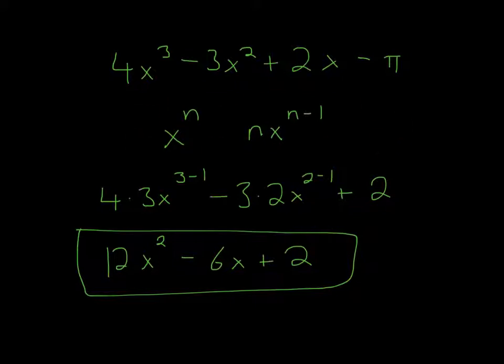So the power rule just states that a variable such as x raised to a power such as 3 or 4, what will happen to it when you take the derivative is that the n will come down, you'll multiply it with x, and then it'll be n minus 1. So what does all that mean?